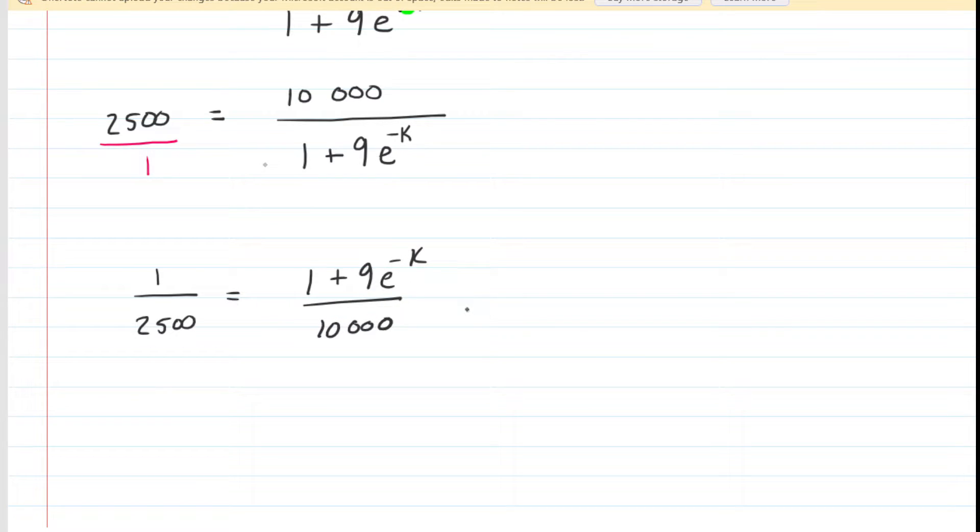Now to continue solving, we would multiply both sides by 10,000, so that the 10,000s cancel on the right-hand side. On the left, we have 10,000 times 1 over 2,500. That, of course, is equal to 4.